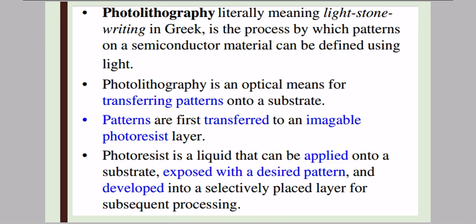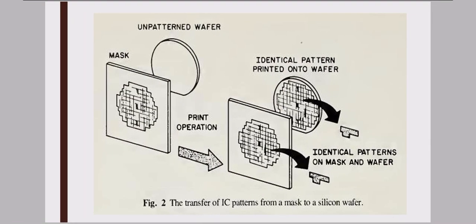Patterns are first transferred to an imageable photoresist layer. Terms like what is a photoresist and which light to use for exposure will be discussed in subsequent slides. Photoresist is basically a liquid that can be applied on a substrate; when it is exposed with a desired pattern and developed, some design is created on your substrate. The portion we need to keep we retain, and the rest we etch away — etching means removal of unwanted material.